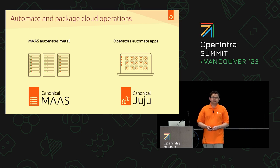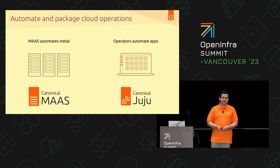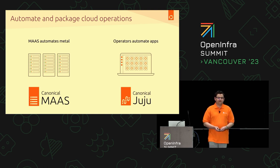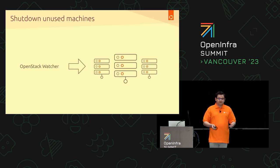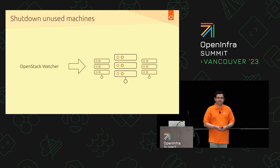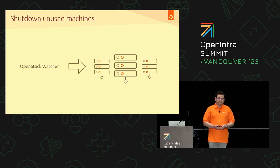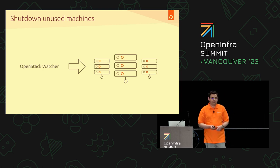Automate and package cloud operations. In Canonical's world, this is MAAS and Juju — MAAS takes care of metal automation while Juju handles application automation. Also, shut down unused machines — it's not uncommon to see unbalanced clusters when running on-prem. There's a service in OpenStack called Watcher that enables you to automatically live-migrate instances between nodes and shut down nodes that don't need to be powered up at that point.